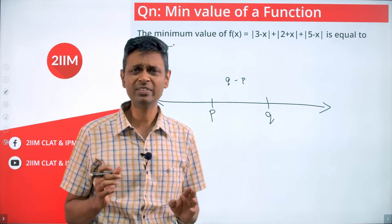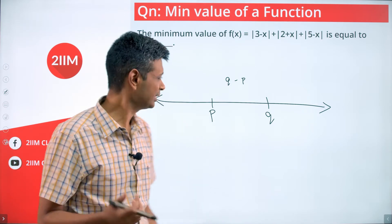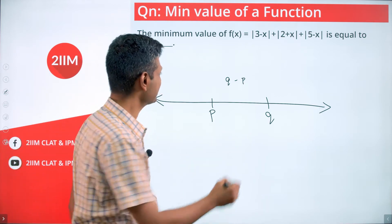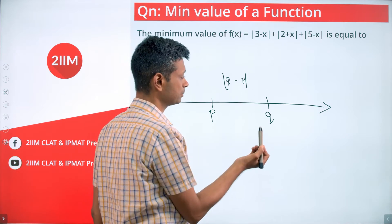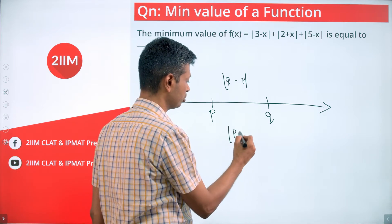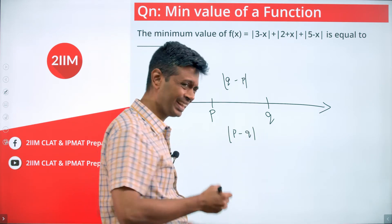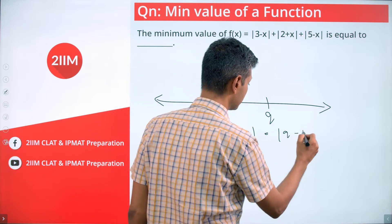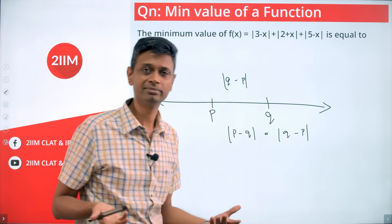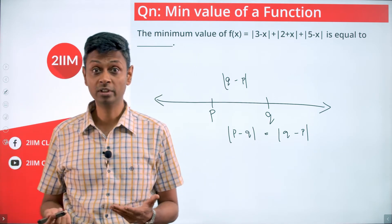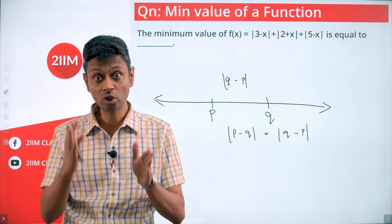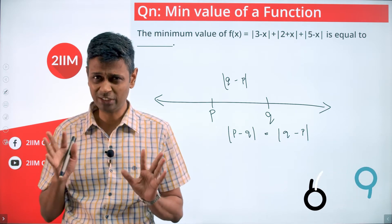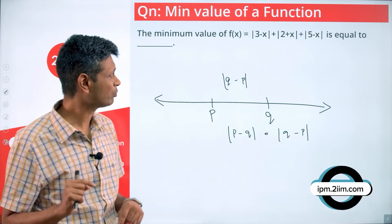If we're given two points p and q on the number line and don't know which is greater, the distance between them is |q - p| or equivalently |p - q|. The key takeaway: |p - q| = |q - p|. Whether we do 3 minus 5 or 5 minus 3, the modulus gives the same result — 2. Very simple and wonderful idea.